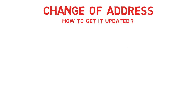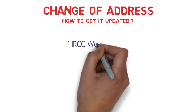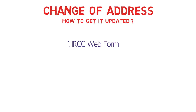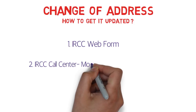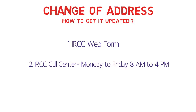Now let's talk about change of address. It is very common that someone landing there has a temporary address and wants the PR card delivered to a different address. There are two ways to do it: the first way is the IRCC web form — I'll provide the link in the description and show you how to update it. The second way is calling the IRCC call center.